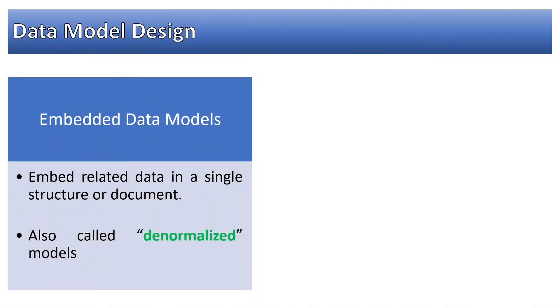What are embedded data models? Embedded data models embed related data in a single structure or document. We want to store our data in a single document in JSON, a single document also called denormalized. We are not creating or maintaining multiple collections to maintain relationships amongst different entities.